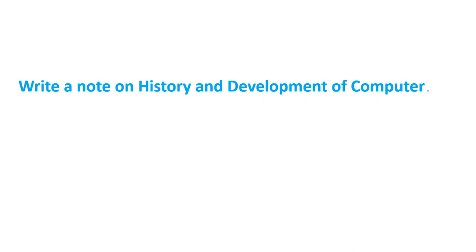Based upon these topics, they will ask you to write a note on the history and development of the computer. You need to write all of these things. If you find the images unclear, you can go to Google Chrome or Internet Explorer and type the name of the machine to get its image. Do click on the like and subscribe button for more information regarding computer science subjects.